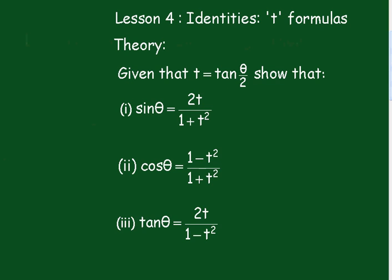Lesson 4: Identities — T-formulas Theory. Given that t equals tan(θ/2), show that sin θ equals 2t over (1 plus t squared), cos θ equals (1 minus t squared) over (1 plus t squared), and tan θ equals 2t over (1 minus t squared).